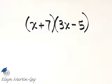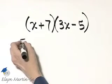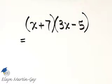This is a binomial times a binomial, so if you'd like, you can use the FOIL order for multiplying.